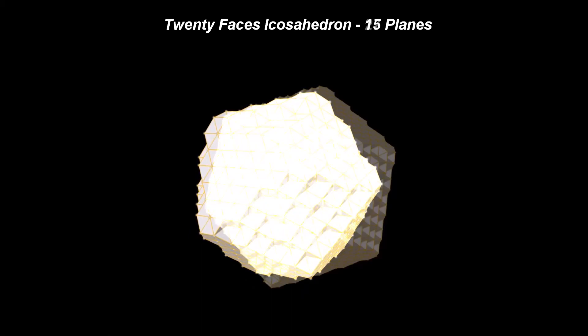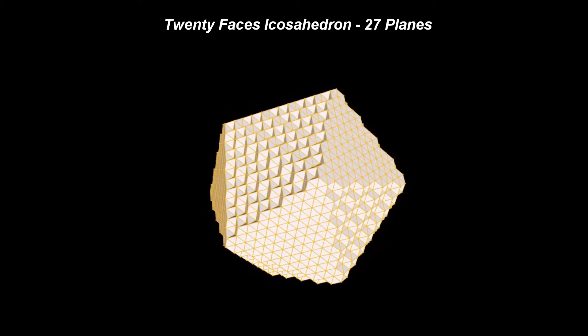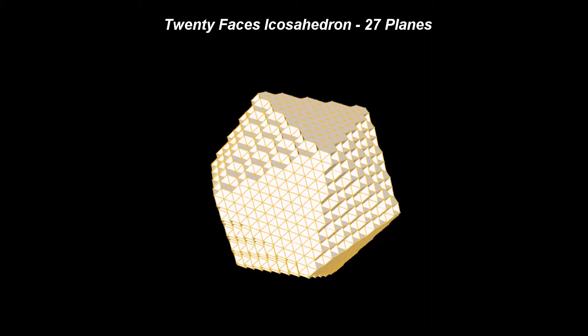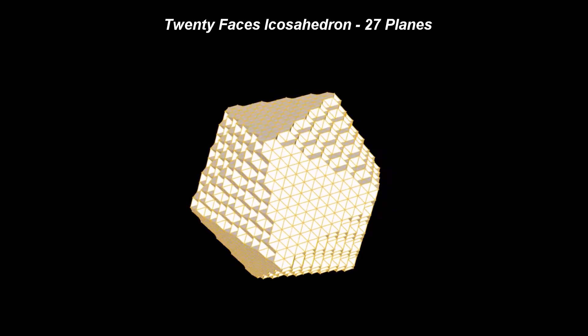As said before, we can see clearly now how a more perfect icosahedron emerges when more and more spheres are used.